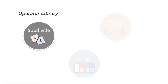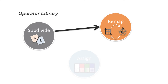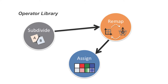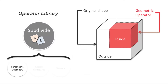Our operators are divided into three categories which are used in sequence to design complex hierarchies of operators. Given an initial shape, first we subdivide it into smaller parts. Then we optionally remap each individual part, to which we finally assign a material composition. The assignment can be the result of a more complex subdivision, thus enabling hierarchical composition.